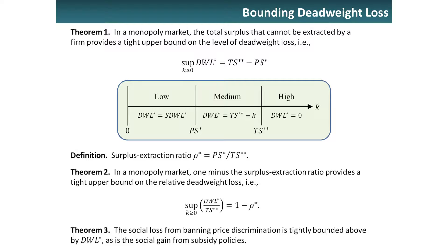Theorem two is not really much of a theorem — it just says you get rho by taking that result and dividing to make it a ratio. The surplus extraction ratio rho star is equilibrium producer surplus — what the monopolist can extract from the market — divided by first-best surplus. That relates rho to deadweight loss.